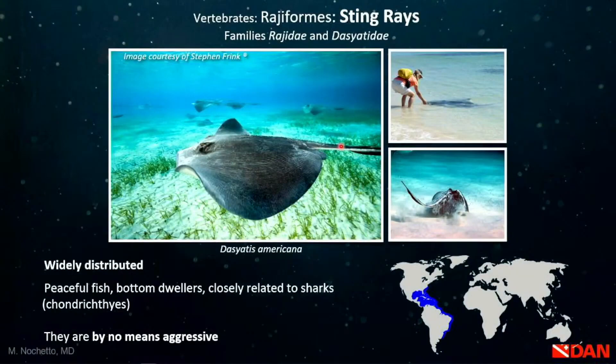Stingrays are widely distributed in all oceans. The species Dasyatis americana ranges from southern New Jersey to Uruguay, and similar species exist in tropical and subtropical oceans worldwide — they all have a sting. They are peaceful, bottom-dwelling fish, closely related to sharks, meaning they have cartilage rather than bones, and they are not aggressive. The problem occurs when we walk where they live — partially buried in the sand — and are unlucky enough to step on them.